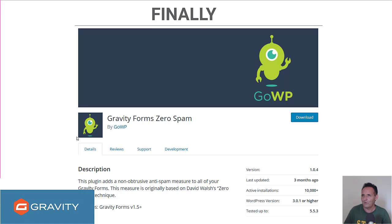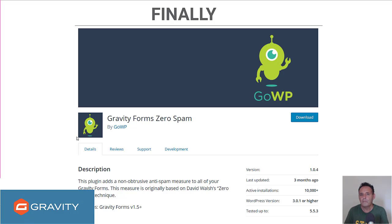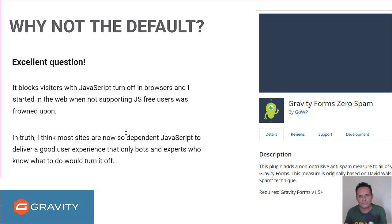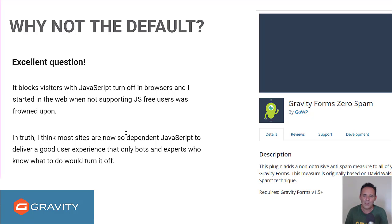For us, across all of our sites over a number of years, Gravity Forms Zero Spam has been true to its name — zero spam every time. Of course there are no perfect solutions; spammers will find a route around everything eventually. But so far, perhaps because not so many people use it, this seems to solve our issue. It does have one caveat: it blocks visitors who don't have JavaScript enabled in their browsers. You have to actively turn JavaScript off in browsers — it's on by default — so I'm starting to consider whether this is a real concern in practice.